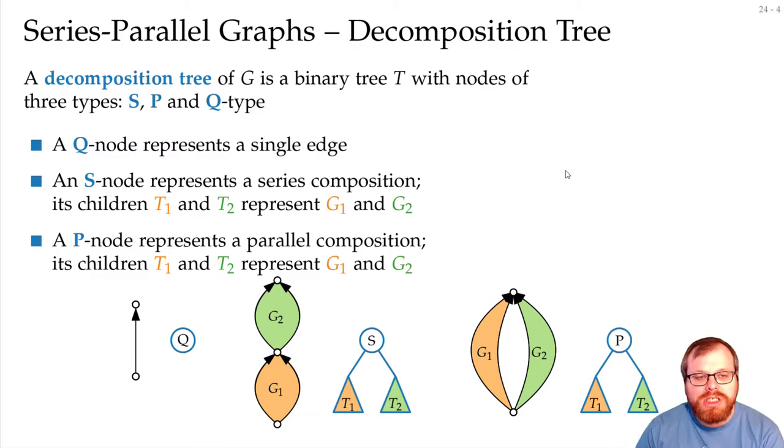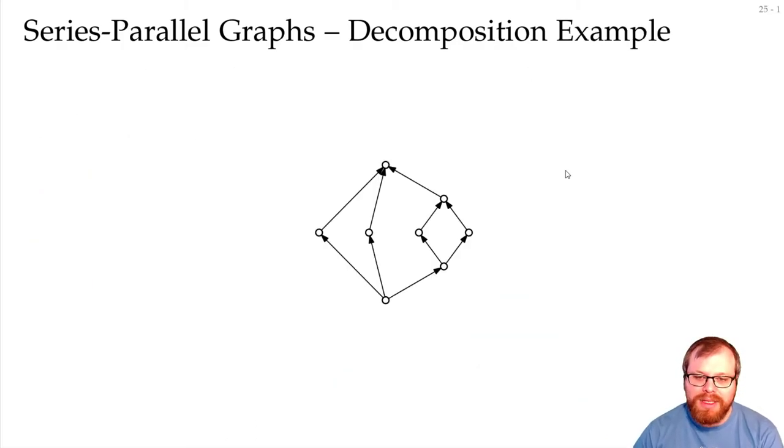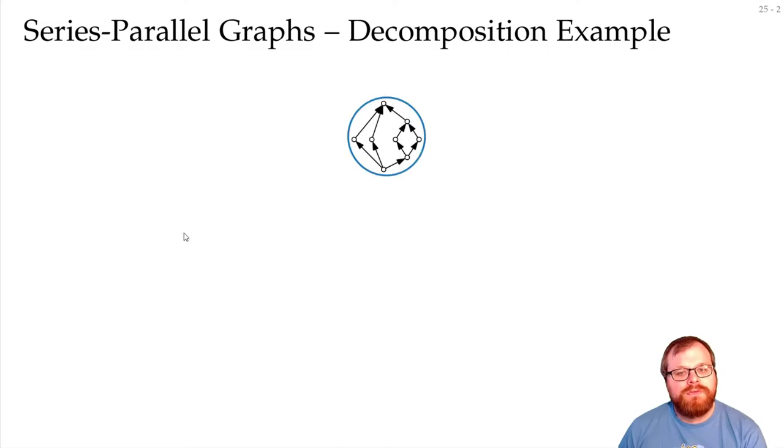But for now, we just stay with SPQ trees, and we will have a look at an example. We have our Series-Parallel Graph here, and we want to build the SPQ trees. So, first, what can we do here, what kind of composition has been used?